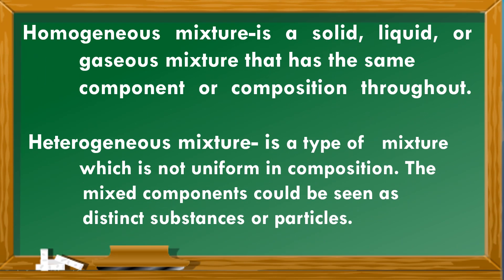A homogeneous mixture is a solid, liquid, or gaseous mixture that has the same component or composition throughout, while a heterogeneous mixture is a type of mixture which is not uniform in composition. The mixed components could be seen as distinct substances or particles.